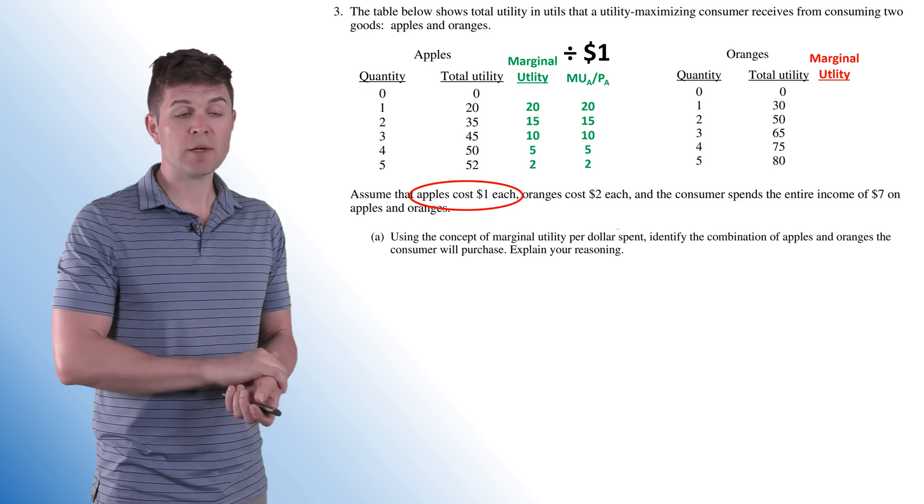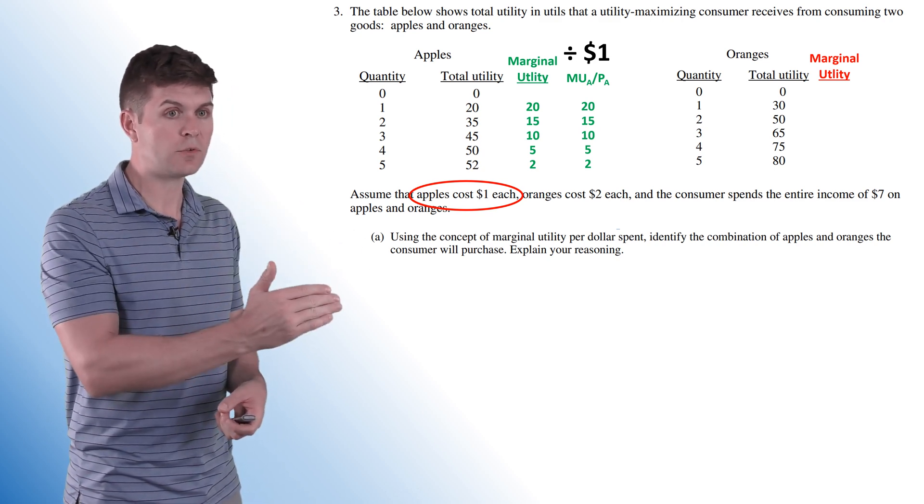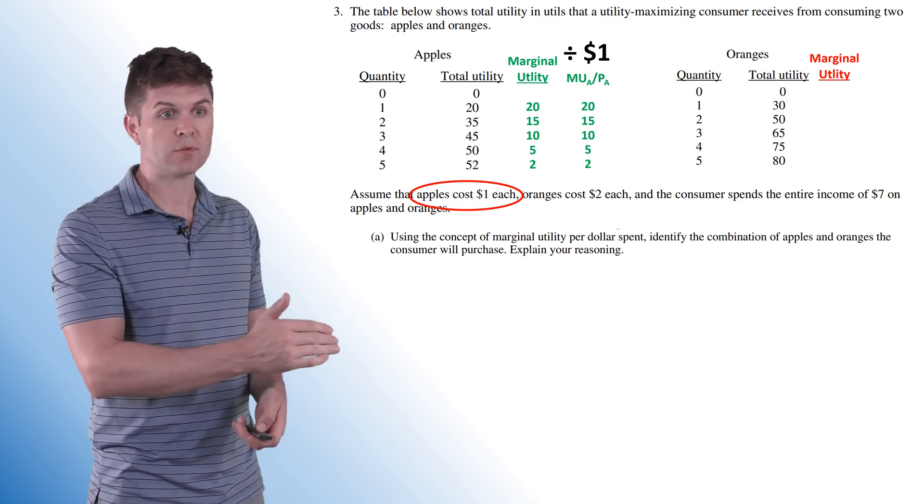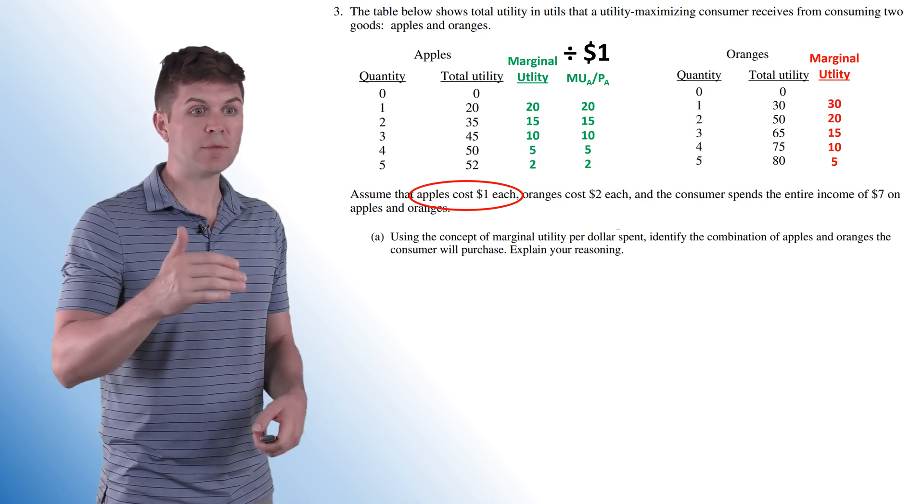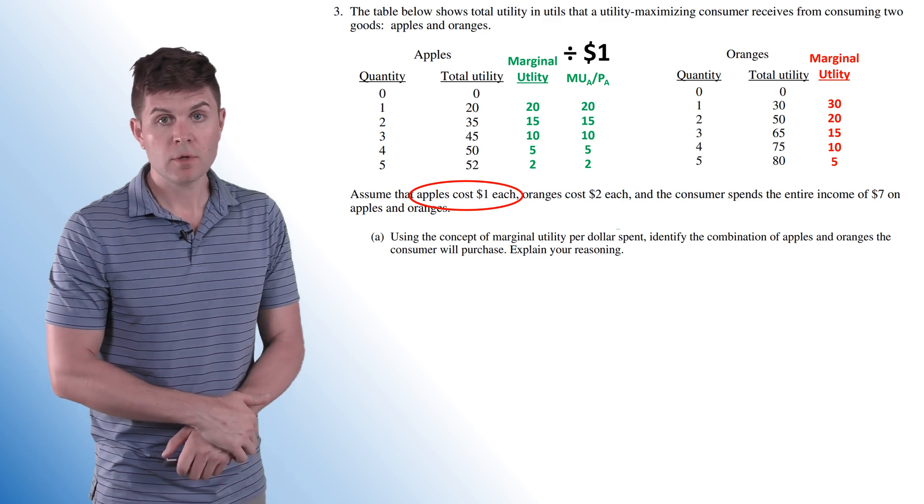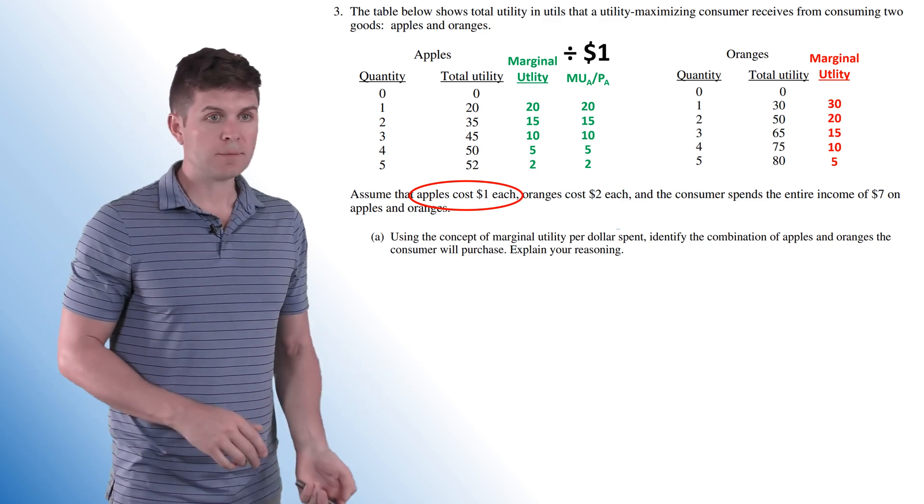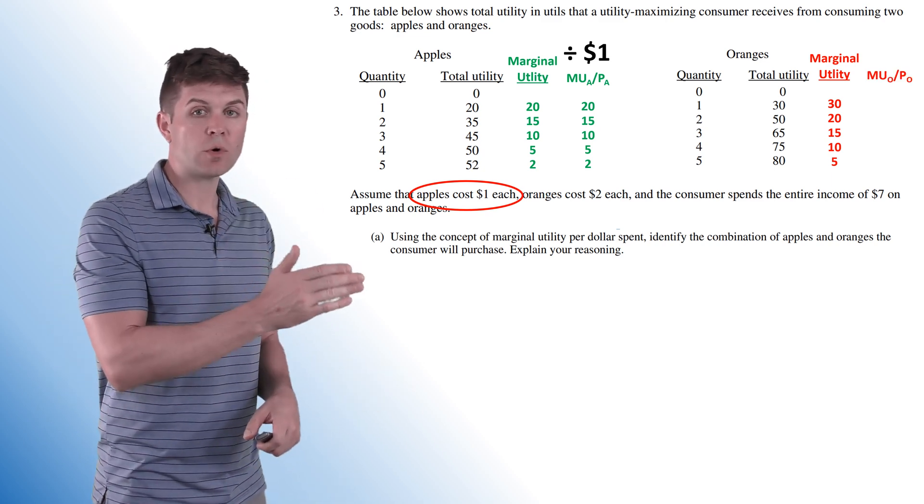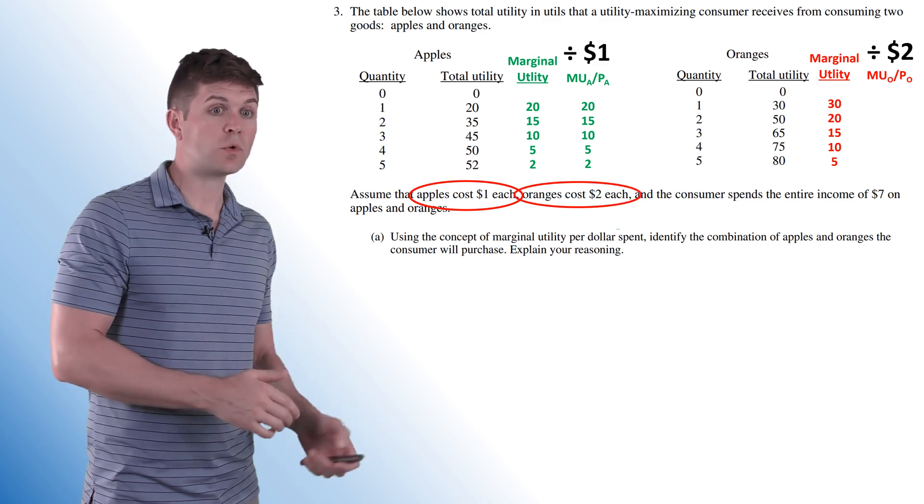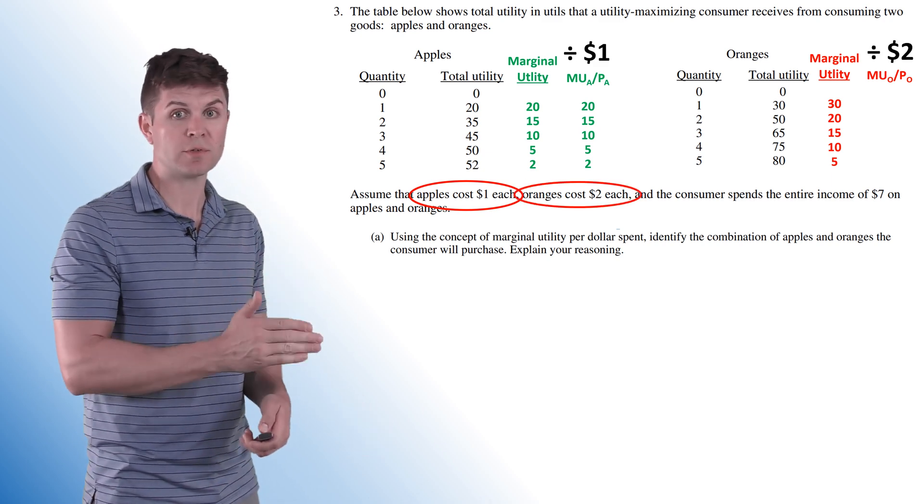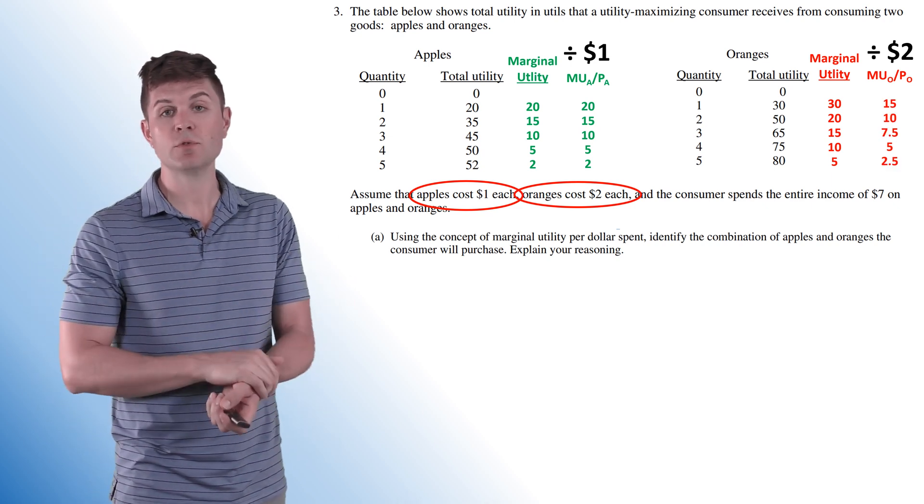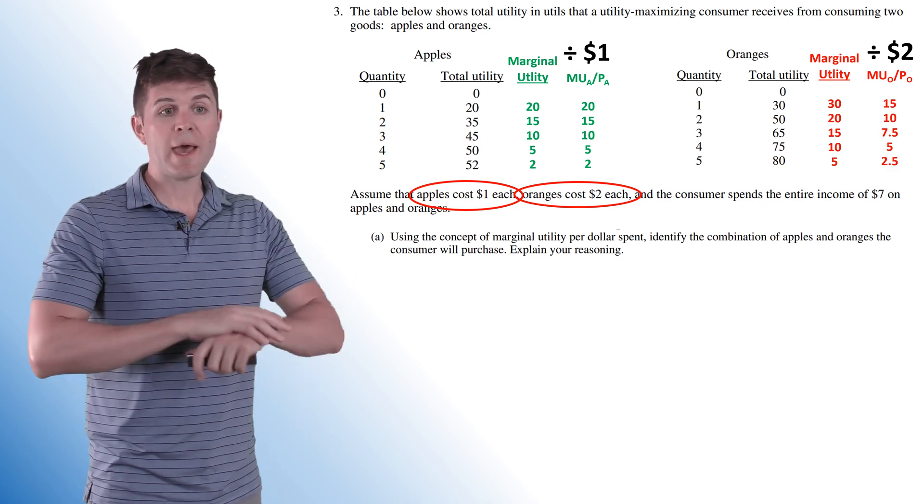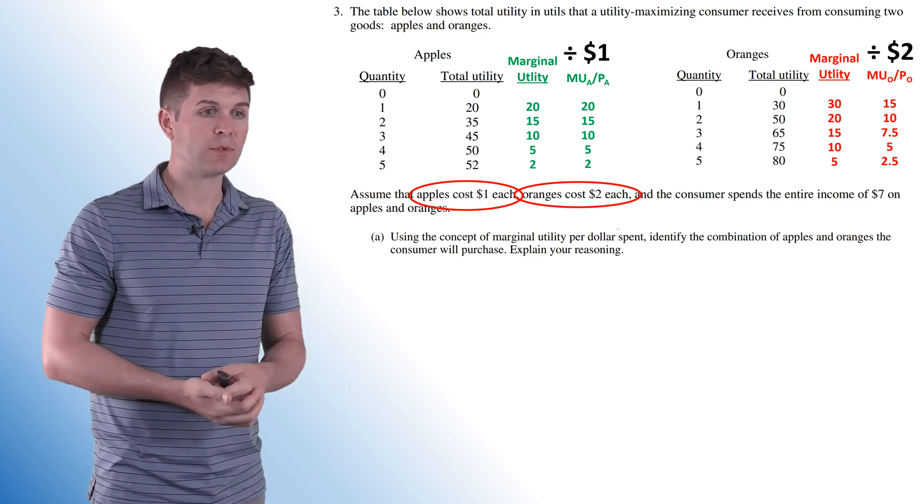The marginal utility of oranges, this total utility starts at zero. First unit we consume, we are up to 30 in total utility. So marginal utility is 30, 20, 15, 10, and five. Now per dollar, the marginal utility of an orange divided by the price of an orange, in this case, oranges are $2 each. So we're going to divide each of the marginal utilities by $2, 15, 10, 7.5, 5, and 2.5. So we have all the information we need to start answering this question.